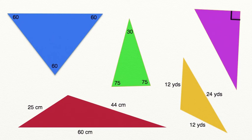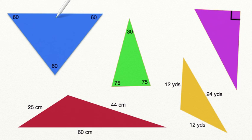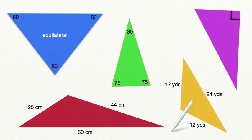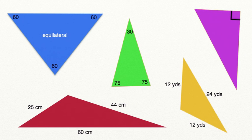Let's walk through a practice problem together. We have five triangles on the screen. I want you to identify which type of triangles these are. Let's start with our blue triangle. We have three angles that all have the same measurement, which must mean we also have three sides that all have the same length. So that sounds like an equilateral triangle. Let's look at our red triangle. We have three sides that all have different lengths, which must also mean that we have three angles that all have different measures. That means we have a scalene triangle.